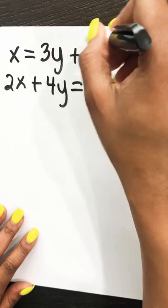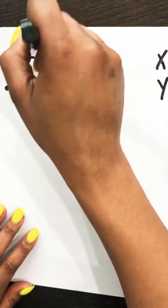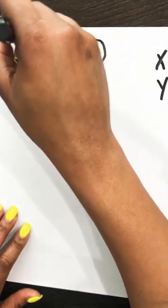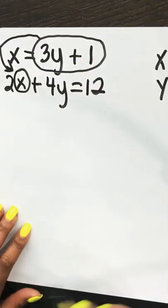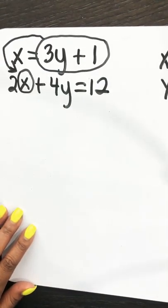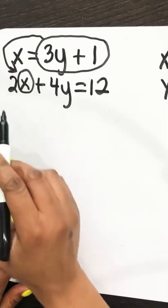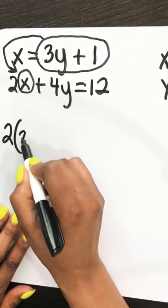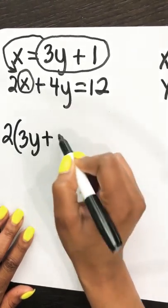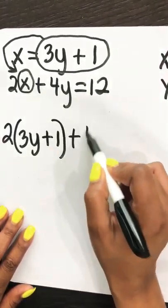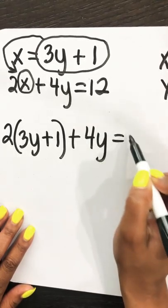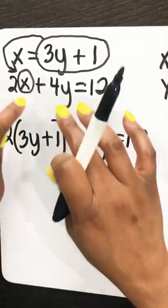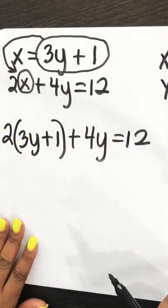They are telling us that x equals 3y plus 1, so we can take 3y plus 1 and put it right in for x in the second equation. If we rewrite that second equation, it would be 2 times (3y plus 1) plus 4y equals 12. We're substituting because we want matching variables — we don't want an x and a y, since that would not be solvable.